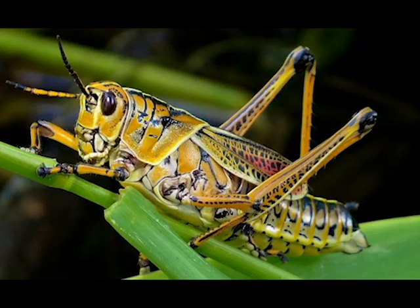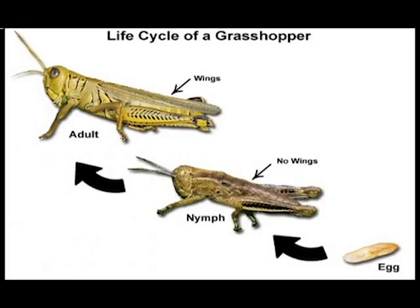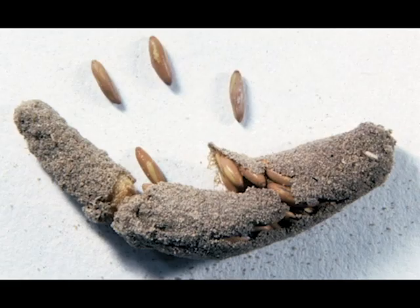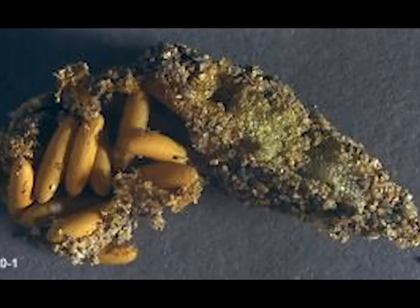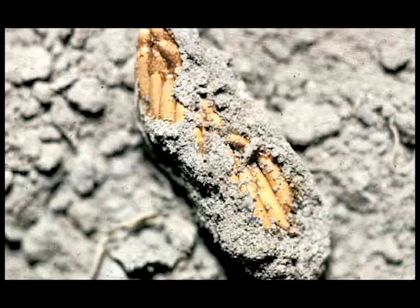Now we are going to check the life cycle of the grasshopper. The grasshopper has a three-stage life cycle. The first stage is the egg. The grasshopper places its eggs into pods. These pods can contain up to 100 eggs inside, and are safely deposited inside the mud.